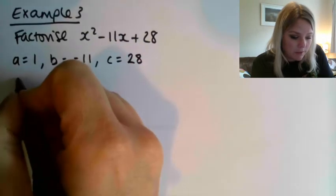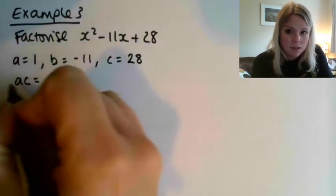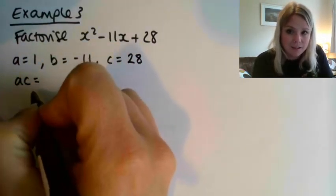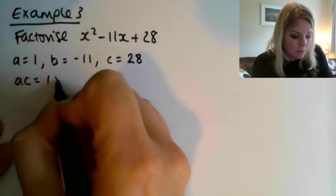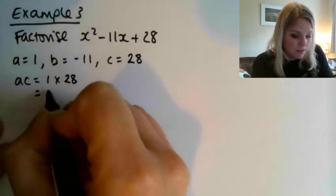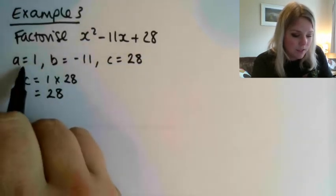Once we've done that, we write out what ac gives us, so that's the product of a and c, so that's 1 multiplied by 28, and that gets us 28. So that's a and c used.